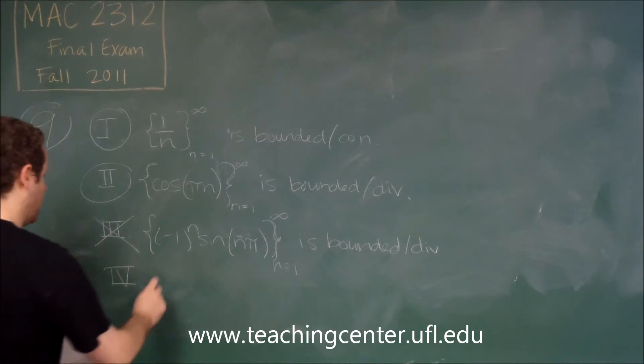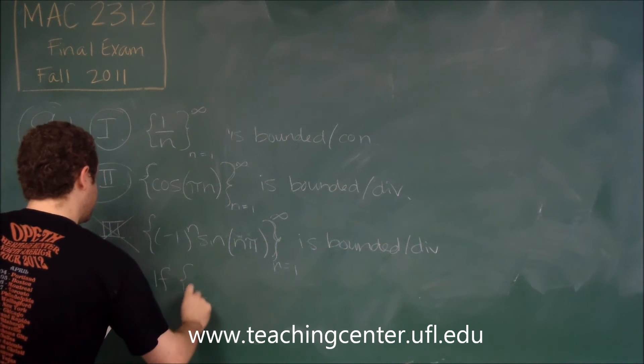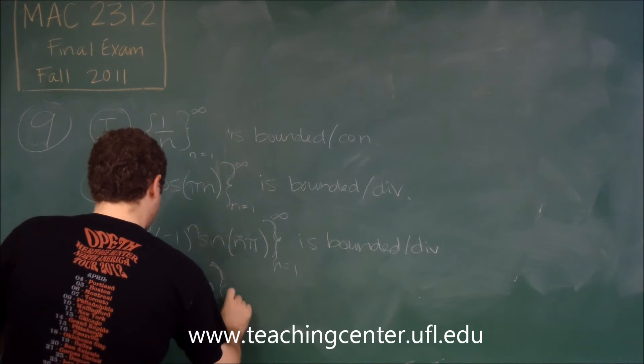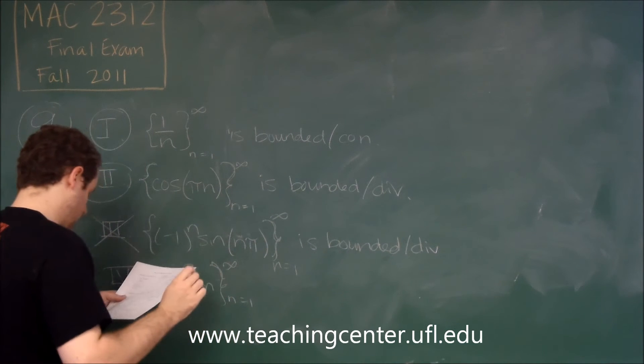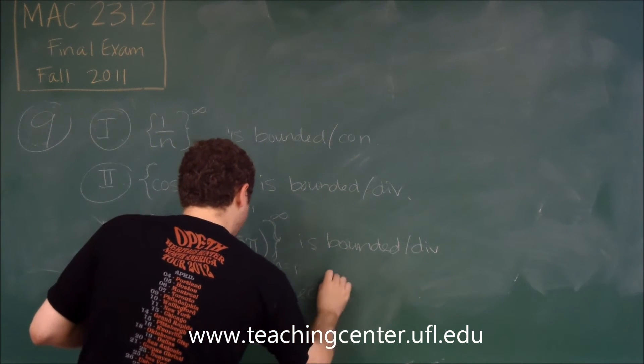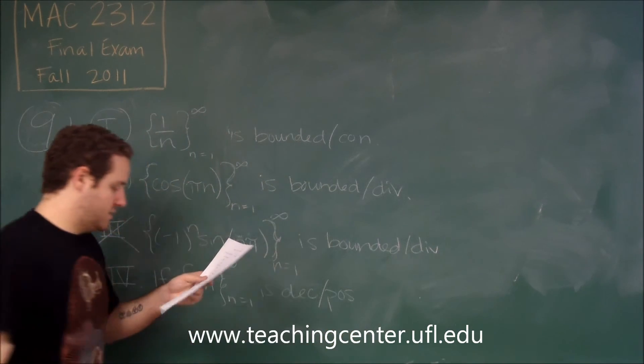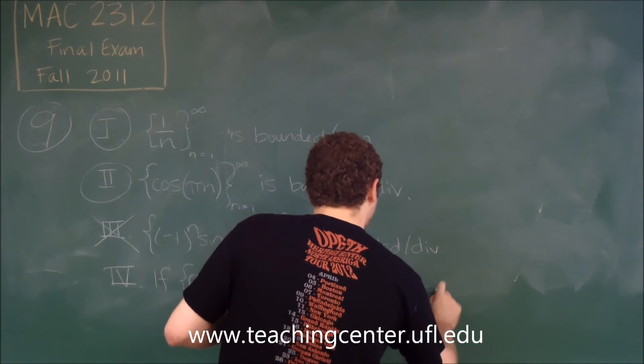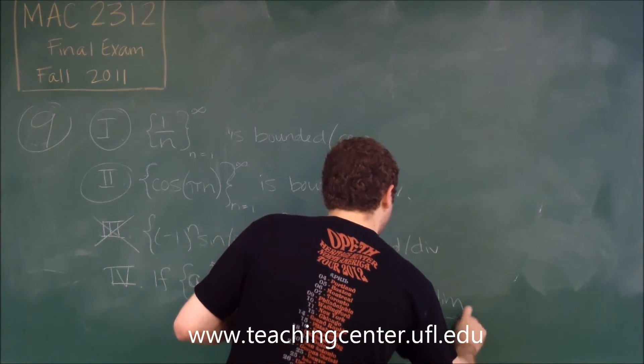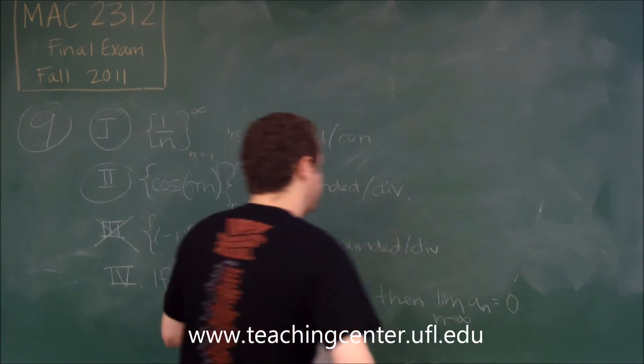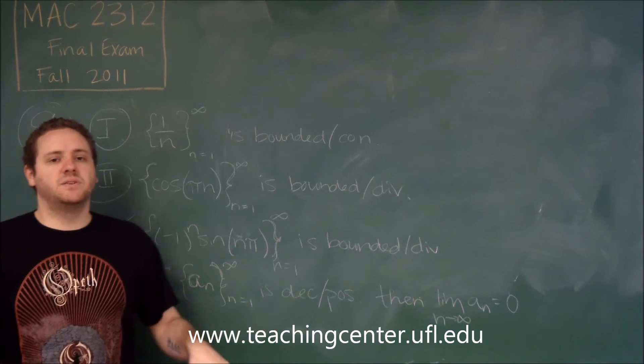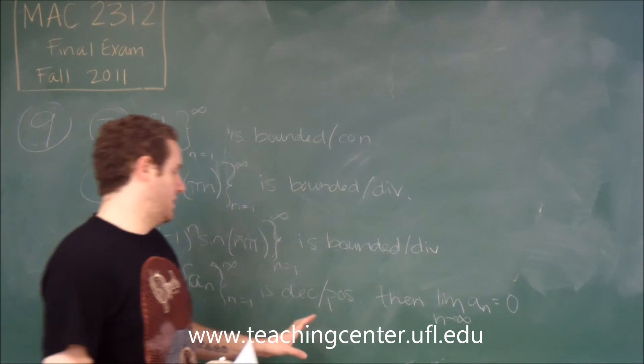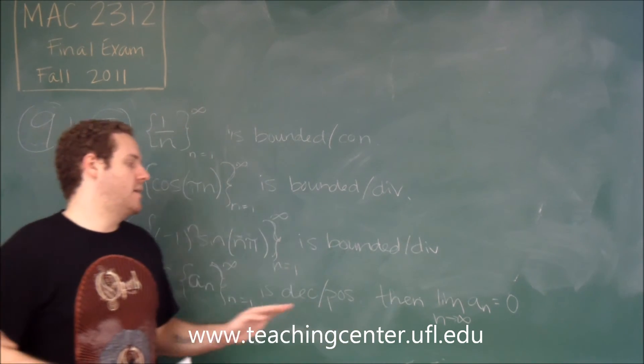And, finally, number four. So, in this case, we just have if some general sequence of a sub n's n equals one to infinity, is decreasing and positive. It's a decreasing sequence with positive terms only. Then, limit as n goes to infinity, a sub n equals zero. So, this is saying if you have any decreasing positive sequence of numbers, then its limit is going to be zero.